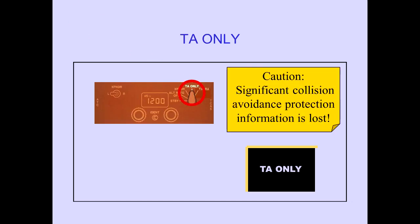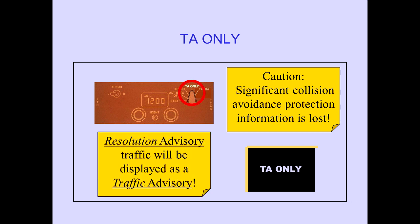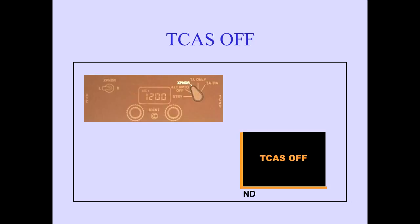In the TA position, resolution advisories are inhibited, and TA messages are displayed on the ND. In this mode, TCAS can only issue traffic advisories. Caution: significant collision avoidance protection information is lost, since resolution advisory traffic will be displayed as a traffic advisory. When TCAS modes are not selected on the transponder mode selector, TCAS is disabled, and the TCAS off message is displayed on the ND.